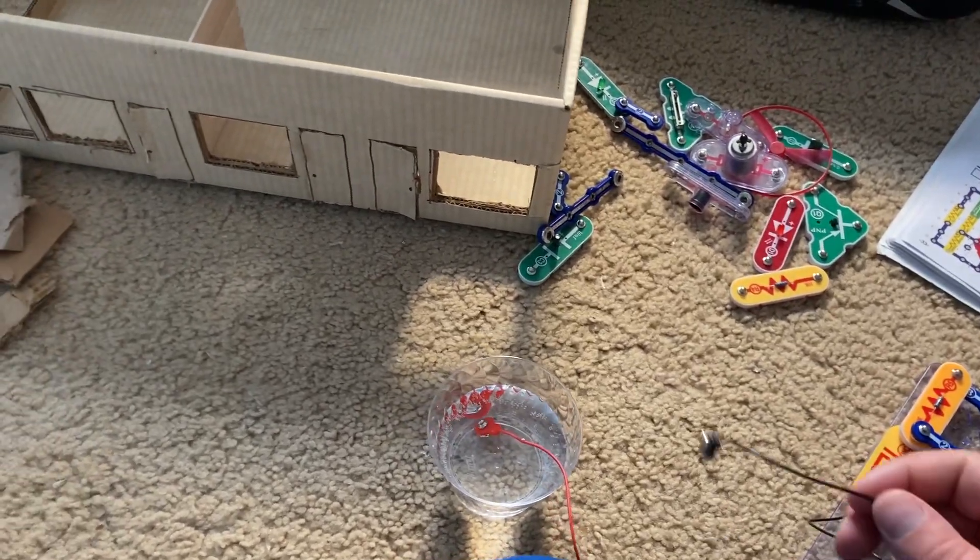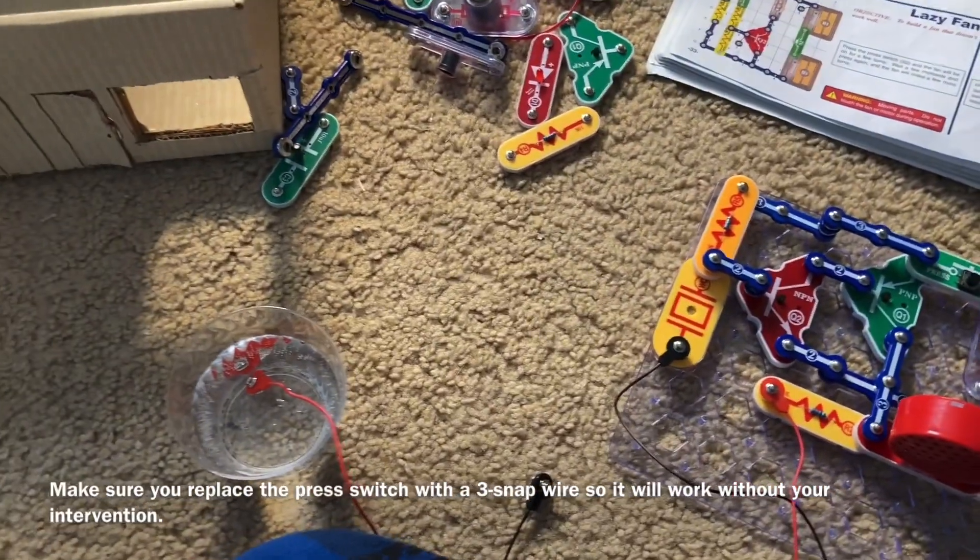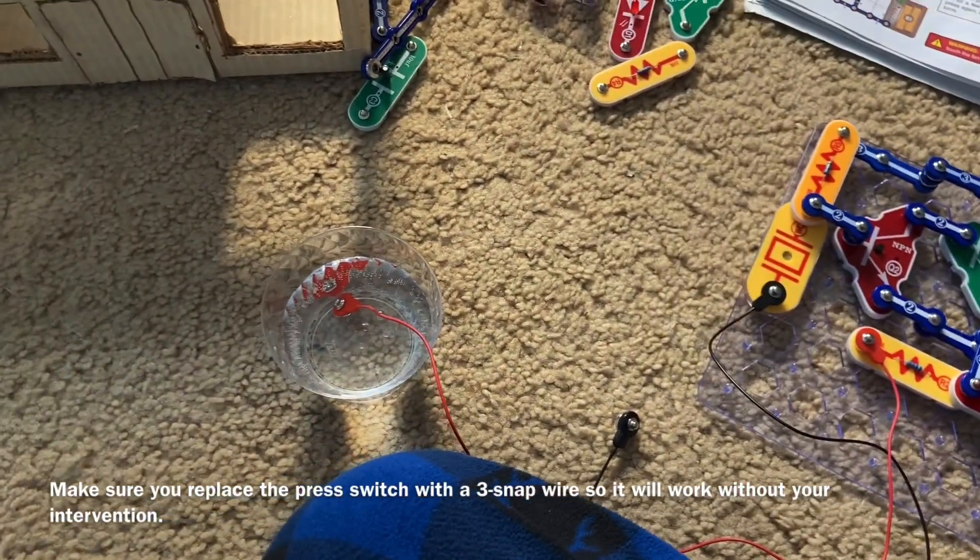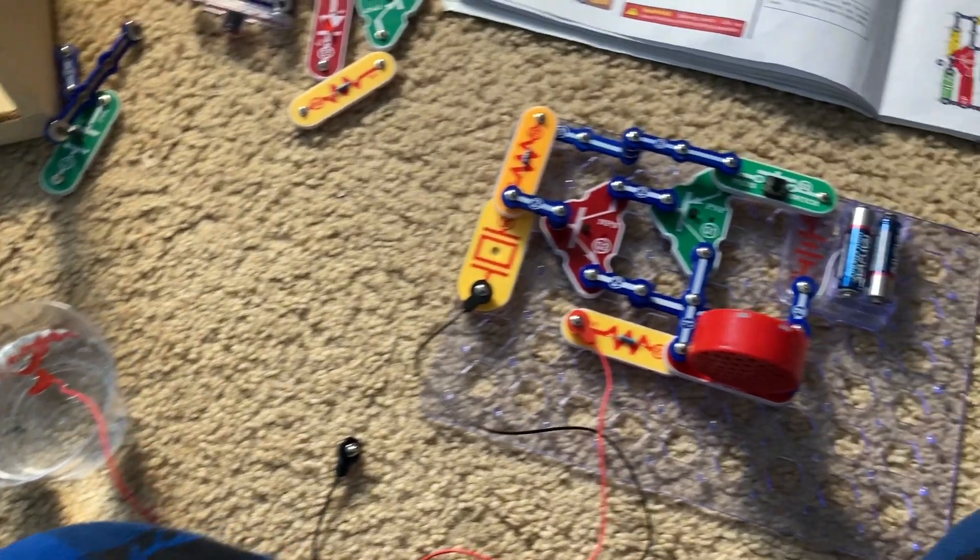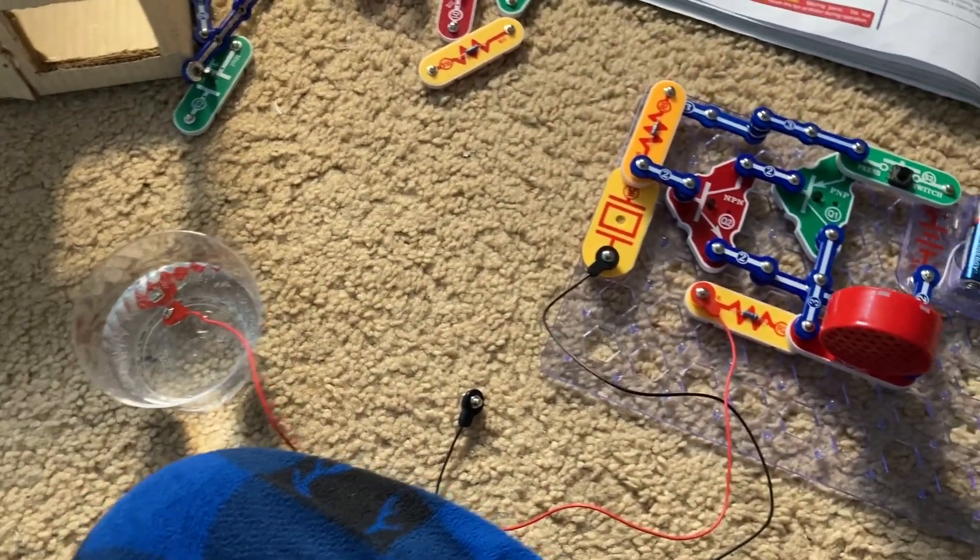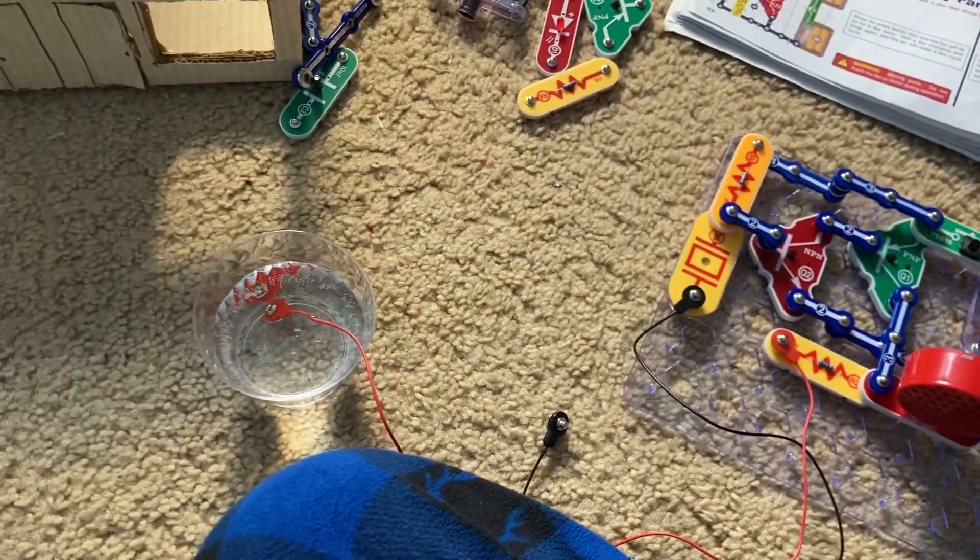This could be like an alarm to alert you of a flood. You could have longer wires that run along your basement floor and then when water contacts them in the event of bad weather, the alarm will sound to alert you.